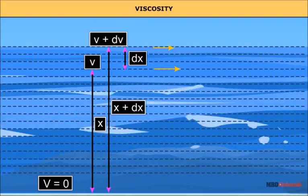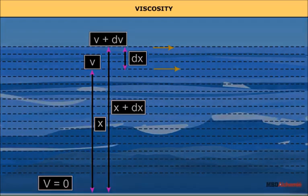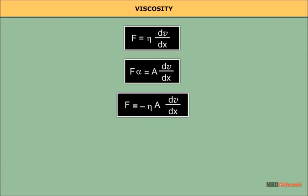The viscous force between the layers of a liquid is found to be directly proportional to the velocity gradient between the layers and directly proportional to the area A of layers in contact. Therefore, F is proportional to A times dV/dX, or F equals minus eta times A times dV/dX, where eta is the constant of proportionality called the coefficient of viscosity, which depends upon the nature of the liquid.